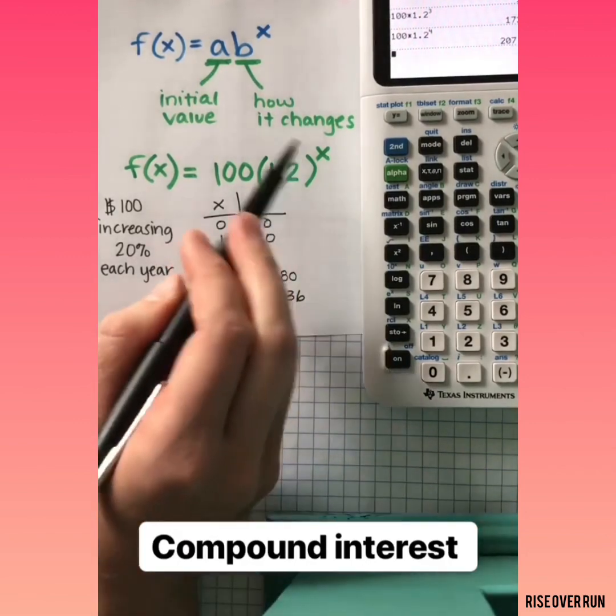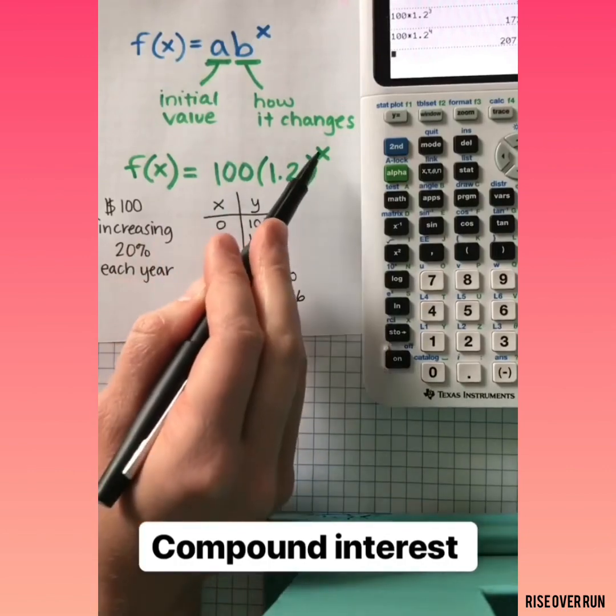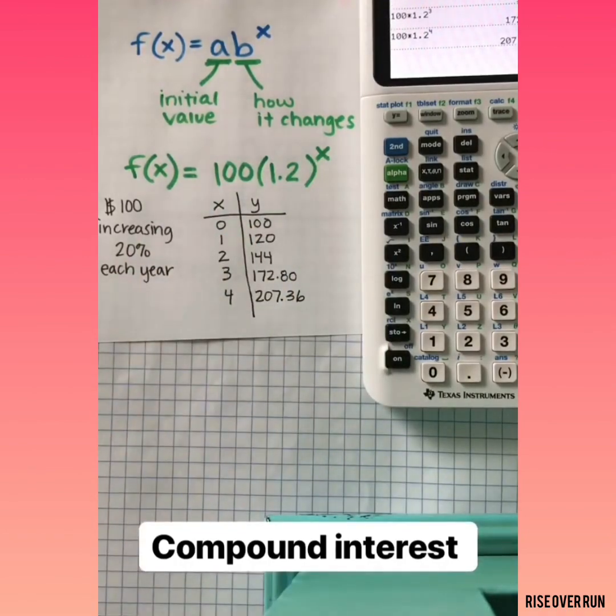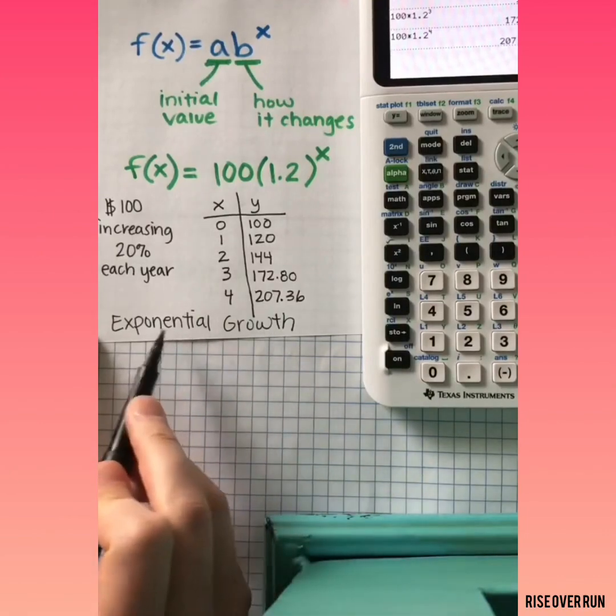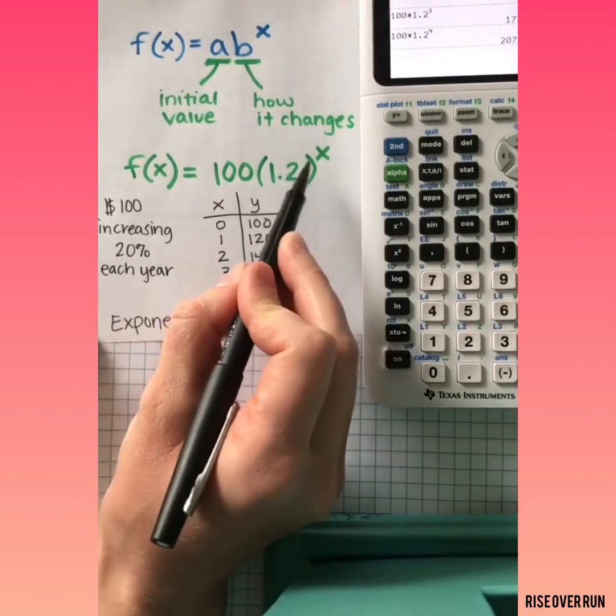This is an example of compounding interest that is compounded each year. This is also an example of exponential growth. Anytime it is growth, this number will be greater than 1.